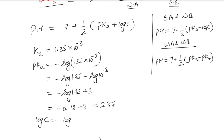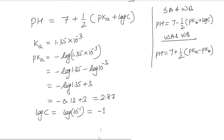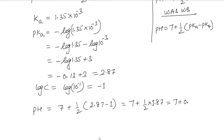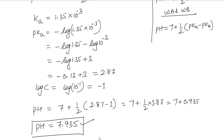The concentration of the salt is 0.1, so log c = log(10⁻¹) = −1. Now pH = 7 + ½(pKa + log c) = 7 + ½(2.87 + (−1)) = 7 + ½(1.87) = 7 + 0.935 = 7.935.